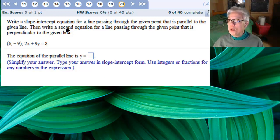Write a slope-intercept equation for a line passing through the given point that is parallel to the given line. Then write a second equation for a line passing through the given point that is perpendicular to the given line.